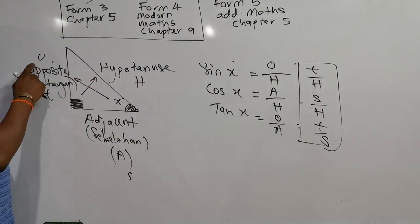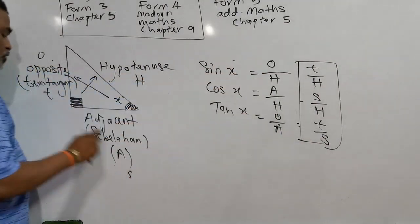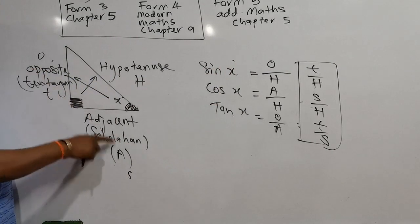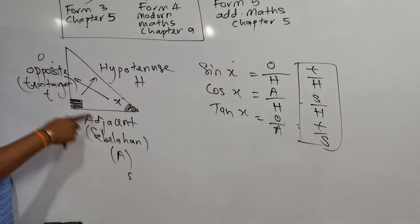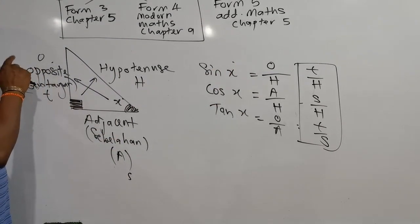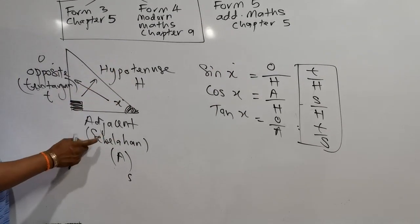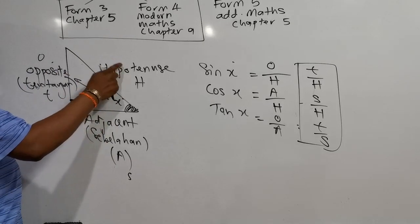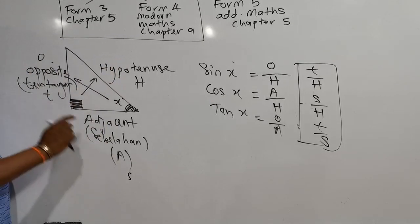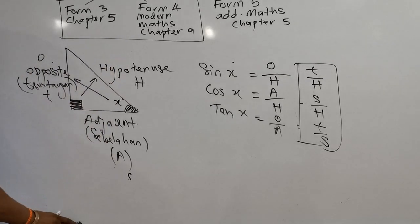So: sin is opposite over hypotenuse. Cos is adjacent over hypotenuse. And tangent is opposite over adjacent. In Bahasa Melayu: sin adalah tentangan dibahagi hypotenuse, cos adalah sebelahan bagi hypotenuse, and tangent adalah tentangan bagi sebelahan. Sangat penting — very important.